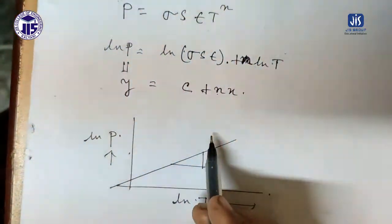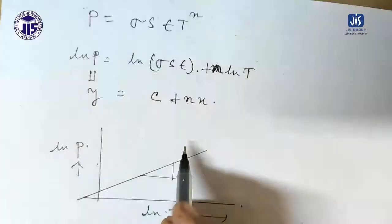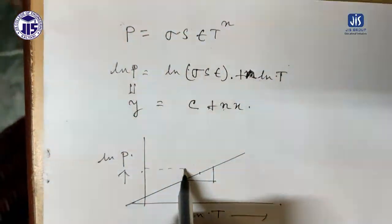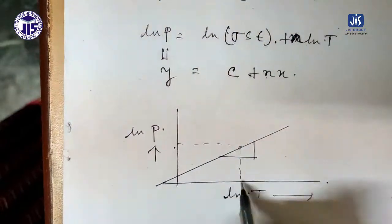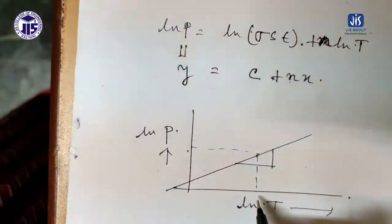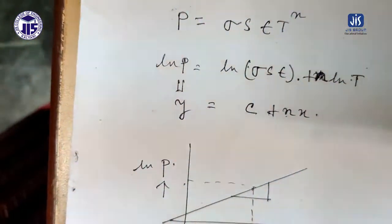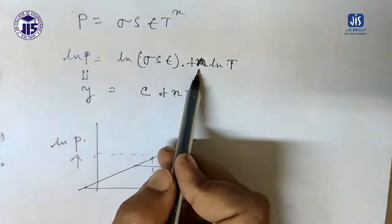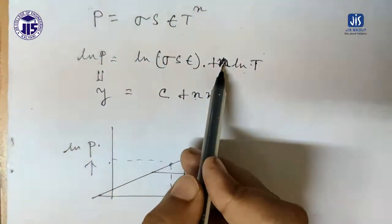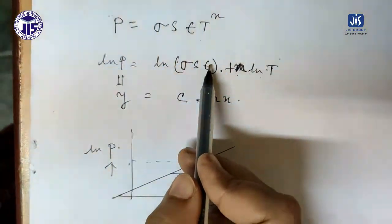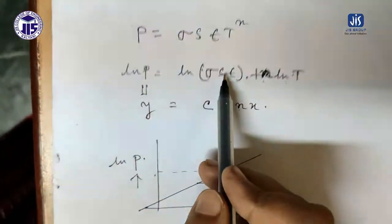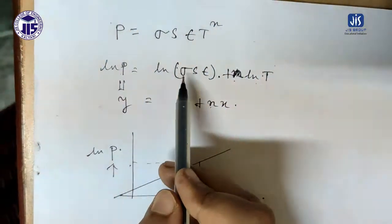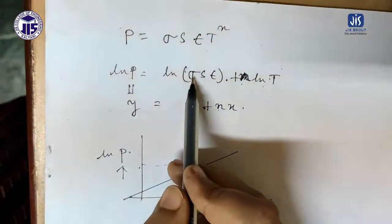Stefan's constant can be determined very easily once we know n. By selecting a particular point on the graph we can read ln P from the y-axis and ln T from the x-axis. Then by substituting the values of ln P, ln T, and n — along with the surface area S and emissivity ε of the filament (which are supplied) — we can calculate the value of σ, Stefan's constant.